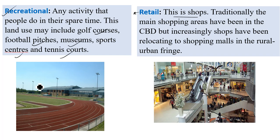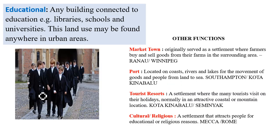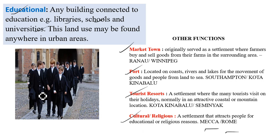Retail functions involve shops. Traditionally the main shopping areas have been in the CBD, but most shopping malls are now relocating to the rural-urban fringe because it's easier for expansion. Educational functions include libraries, schools, and universities. There are also other functions of settlement such as market towns, ports, tourist resorts, and cultural and religious centers like Mecca and Rome.